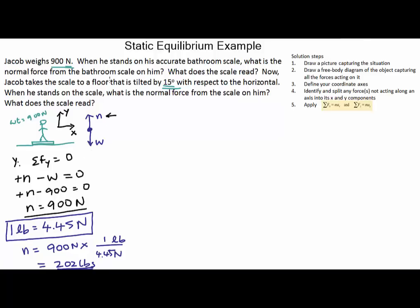Okay, so no surprise here, the scales do read the weight and that's what we get. Now let's see what happens when we put it on a tilted floor. So now I've got the picture over here. I've got a horizontal here, but the floor is not horizontal. It's tilted at an angle of 15 degrees with respect to the horizontal. The scale is placed over here and Jacob is standing on this scale. His weight is still 900 newtons. Nothing changed. It's still the same old Jacob. The question is, what does the scale read?